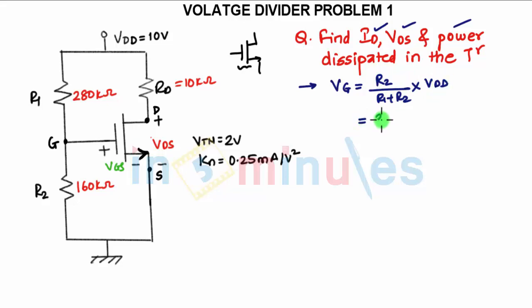Now assuming the transistor to be biased in the saturation region, if the transistor is biased in the saturation region, then only we can use the equation ID equals KN times VGS minus VTN the whole square. So here we are assuming that the transistor is biased in the saturation region.